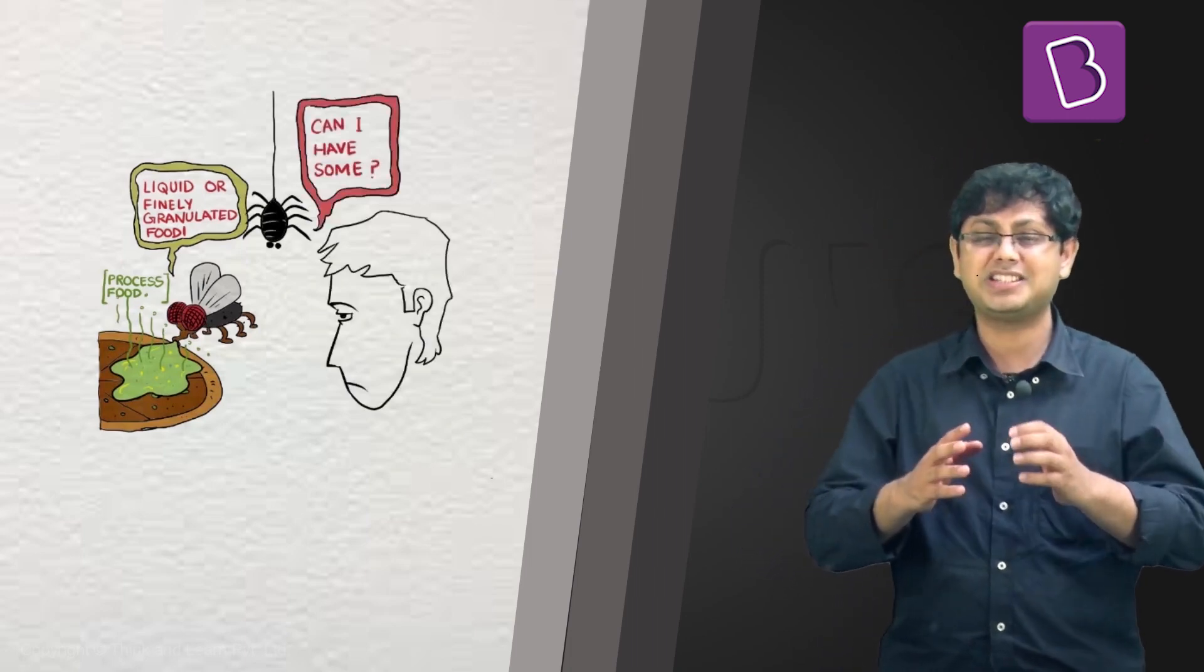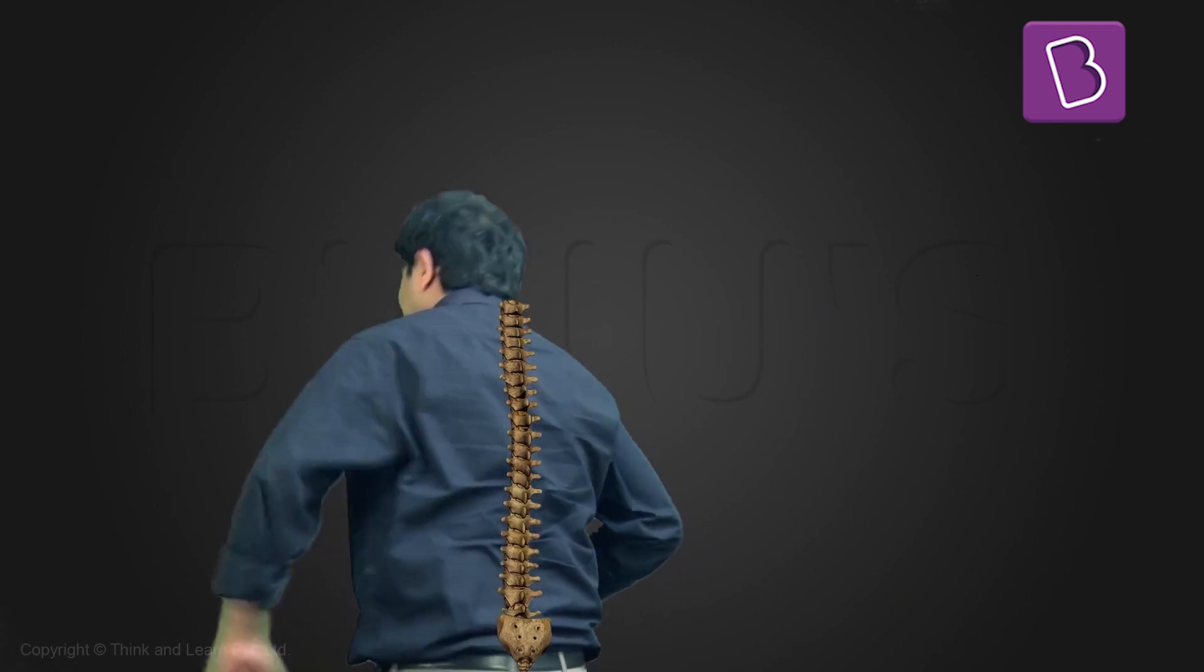Most vertebrates - oh, by the way, vertebrates are animals that have a backbone. We are vertebrates, so are dogs, monkeys, zebras, cats, and cows. All of these are vertebrates.